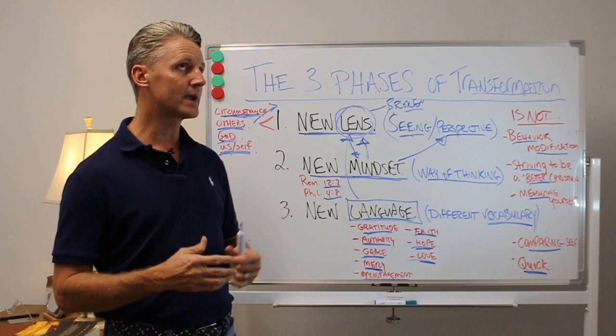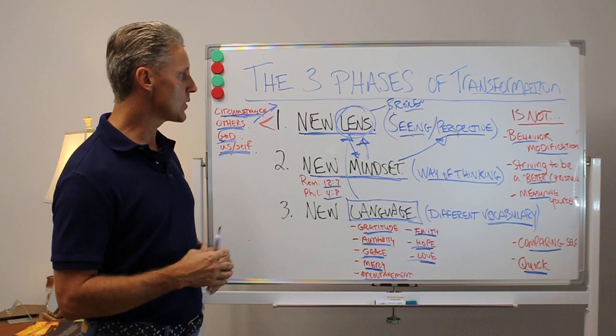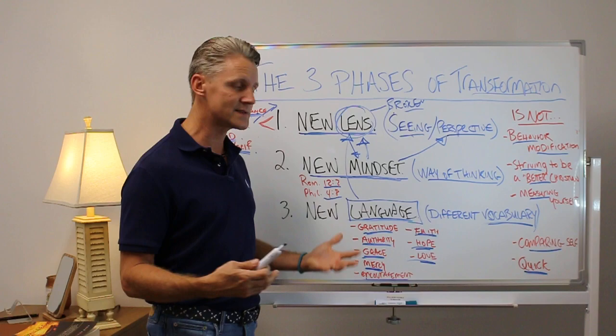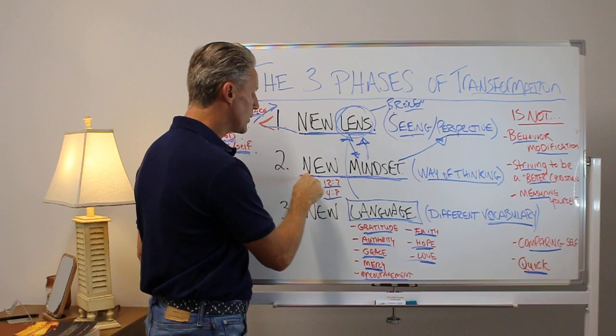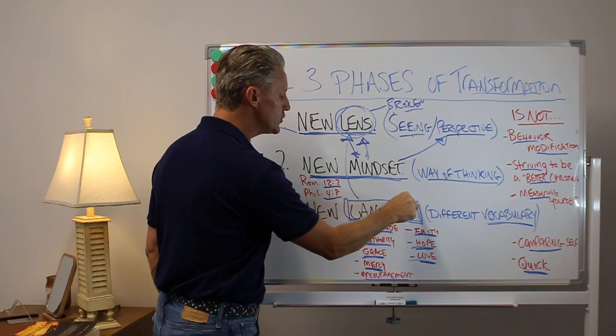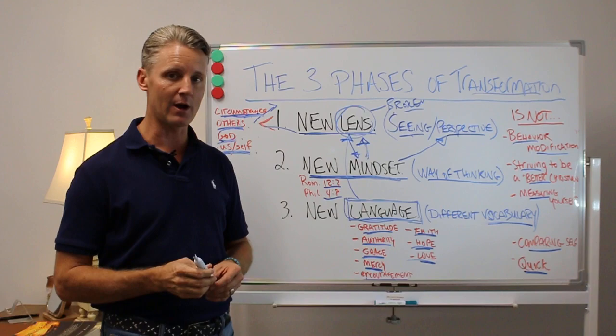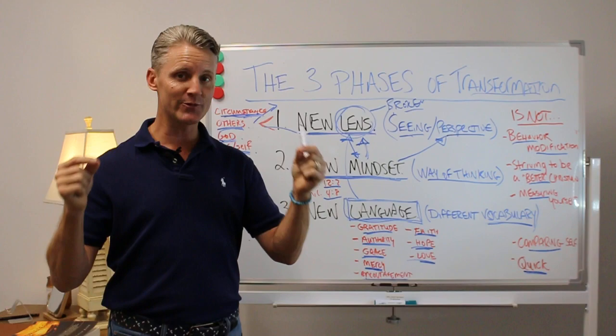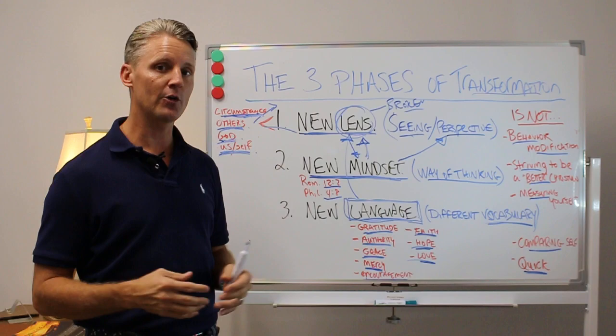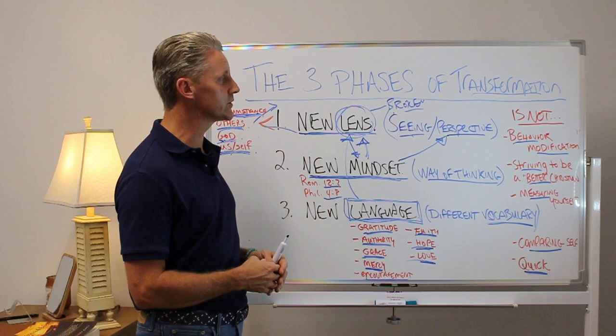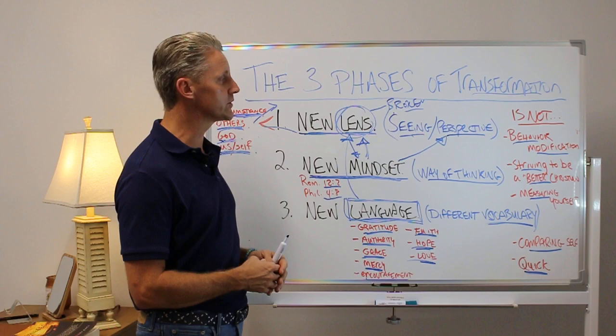So I hope this helps you understand that the transformation phase or process begins with a lens upgrade regarding these four things: circumstances, others, God, and yourself. You renew your mind to this lens. And now you learn to speak a new language that is in alignment with who you really are. Your new man versus your old man has two different languages. And maybe sometime in a video I'll share the difference in how they see and how they talk. So I hope this has helped you understand that transformation is not the goal, but it is the process by which he grows us. And he does it through these three phases.